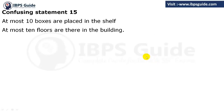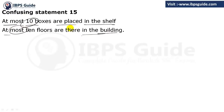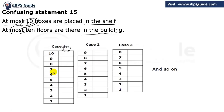The fifteenth statement: at most ten boxes are placed in the shelf, or at most ten floors are there in the building. At most means maximum ten, and minimum can be one. Because maximum is ten, minimum can be one. So possibilities range from 10, 9, 8, 7, 6, 5, 4, 3, 2, down to 1.